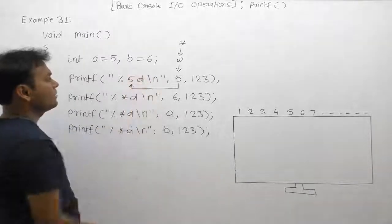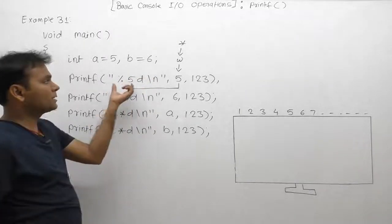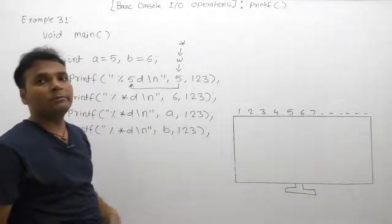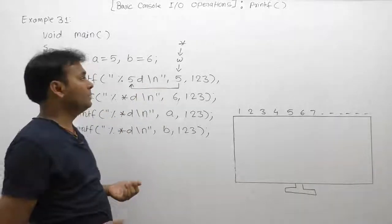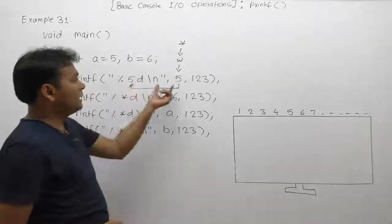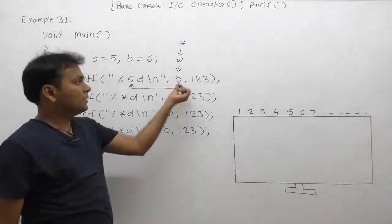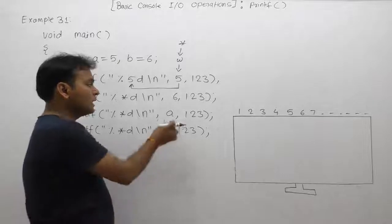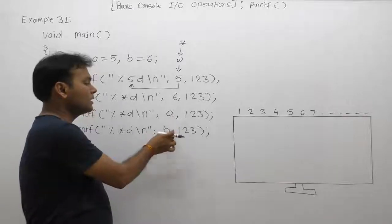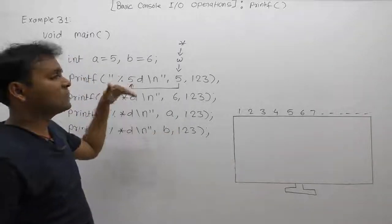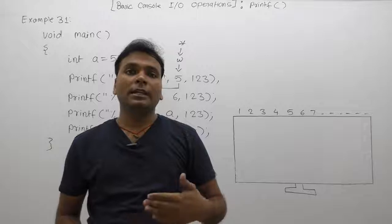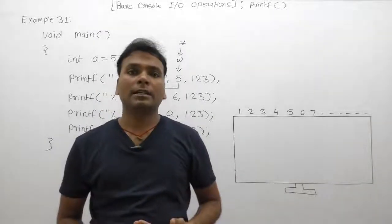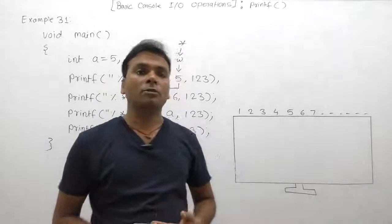It is almost equivalent to %5d, which is similar to the previous example, but here we are supplying a dynamic value. In the previous case, we supply the value directly as a fixed constant, but here we can supply the value for that variable by using scanf from the keyboard.